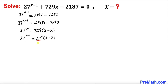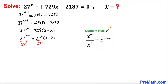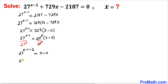Now let's divide both sides by 27 squared. Applying the quotient rule of exponents on the left hand side, we subtract the exponent 2, giving us 27 to the power (x minus 1 minus 2). The right hand side simplifies to just (3 minus x), so we get: 27 to the power (x minus 3) equals 3 minus x.